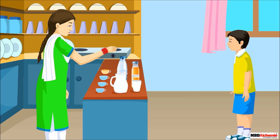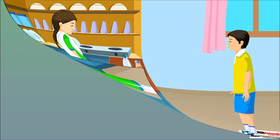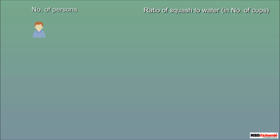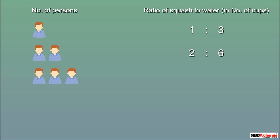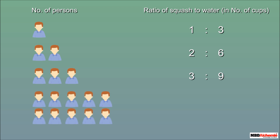Using ratio, it is easy to calculate. The ratio of squash to water for one person is one is to three. For two persons, multiply the ratio by two — it becomes two is to six. For three persons, multiply by three — that is three is to nine. For ten persons, multiply by ten: ten cups of squash and thirty cups of water.